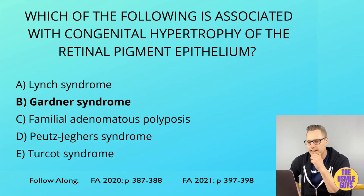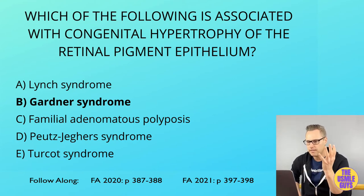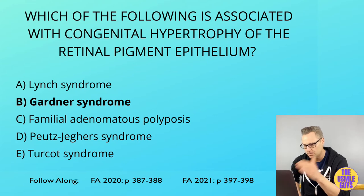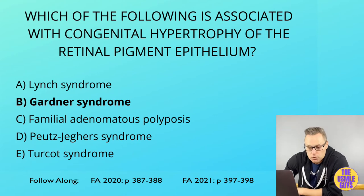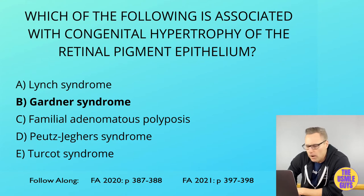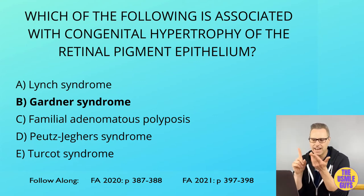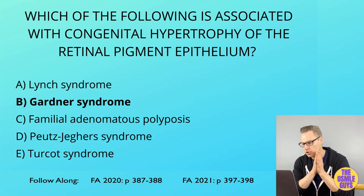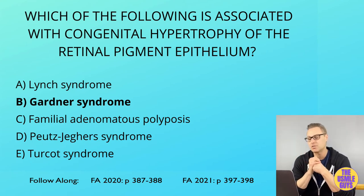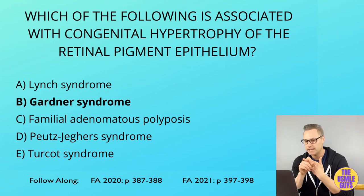Next up is Peutz-Jeghers syndrome, also inherited in an autosomal dominant manner — so for any genetics question with polyposis syndromes, you're choosing autosomal dominant. It is characterized by the presence of many hamartomas throughout the GI tract, in addition to hyperpigmented macules found on the lips, mouth, hands, and genitals. This is one of the very characteristic unique things about Peutz-Jeghers syndrome, and this condition is associated with an increased risk of both breast and GI cancers.